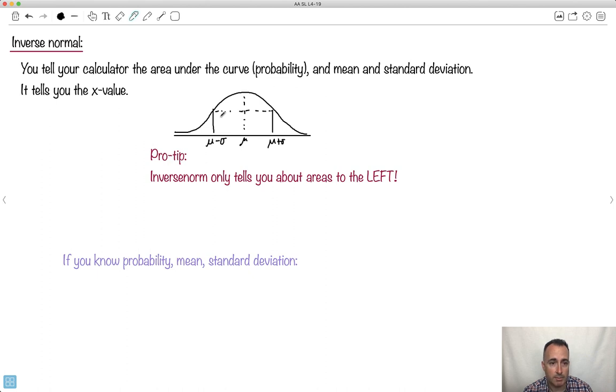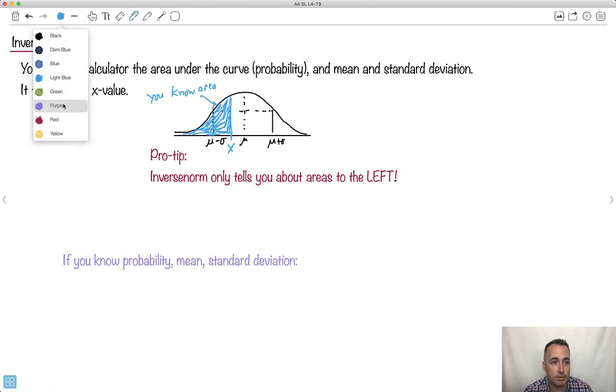So if you know both of these, you know the mean, you know the standard deviation, what will happen is this. You can ask your calculator for something called inverse norm. So let's say I'm given this right here and I know that this area here. So this is some x value, which I don't know. I'm trying to find x here. Let's say I know this area.